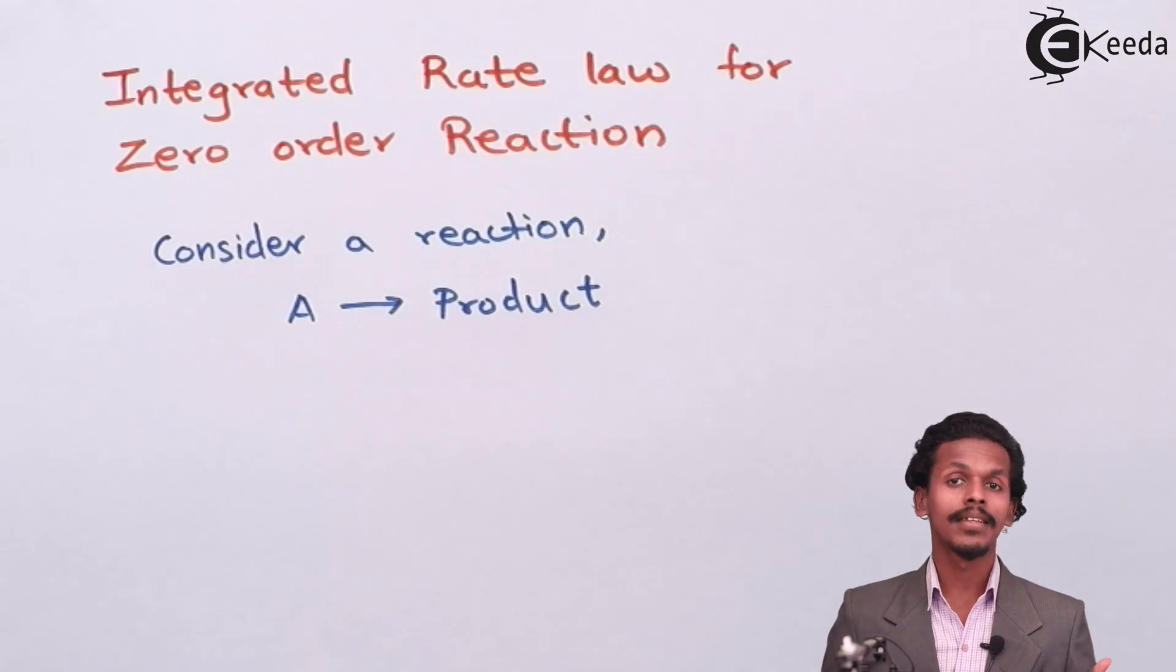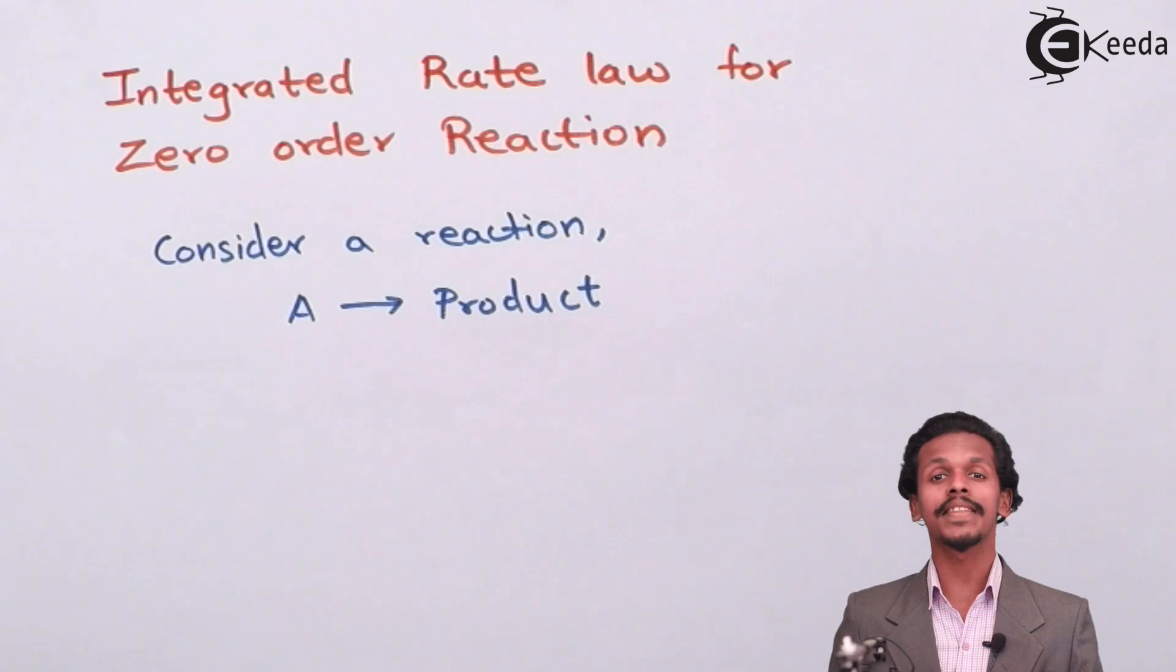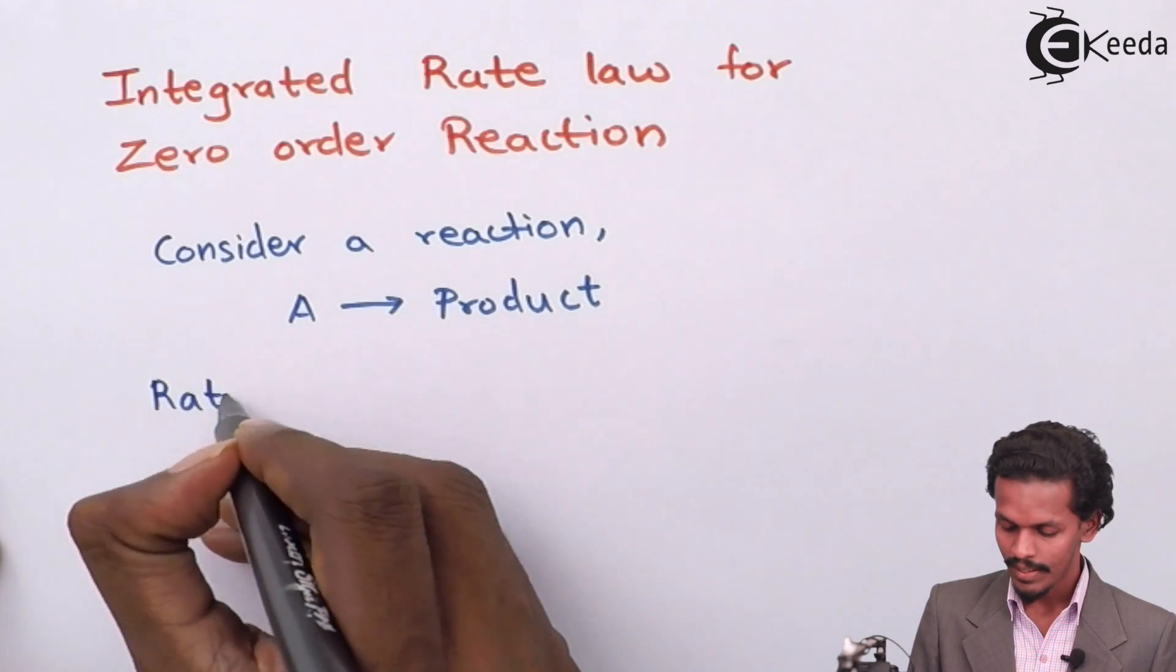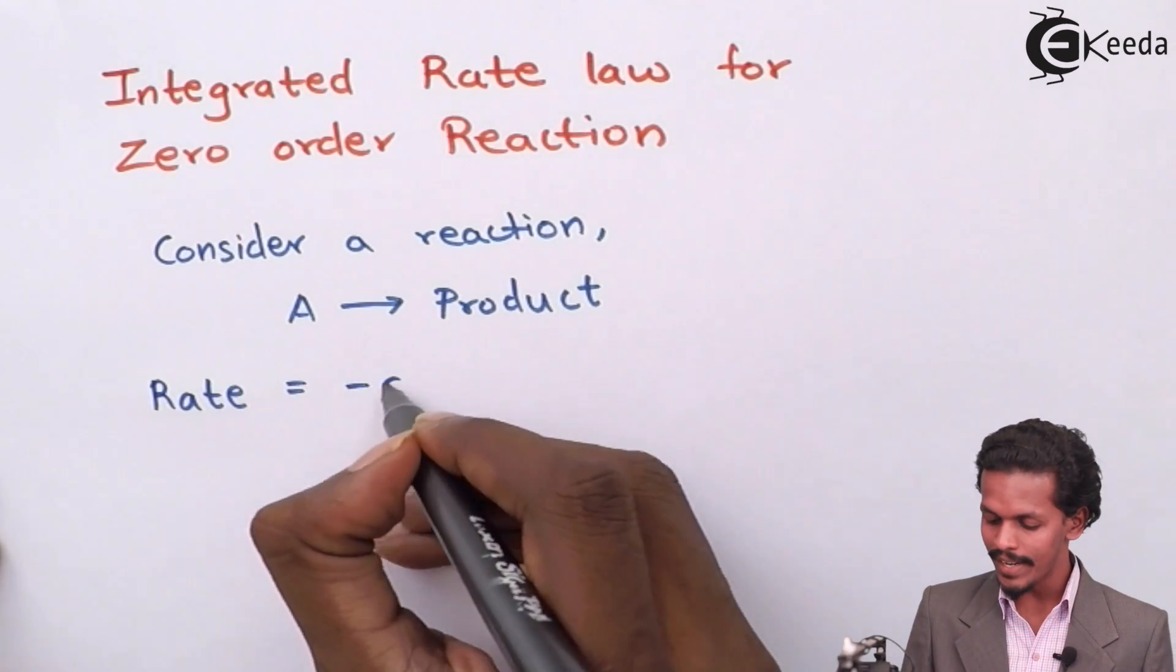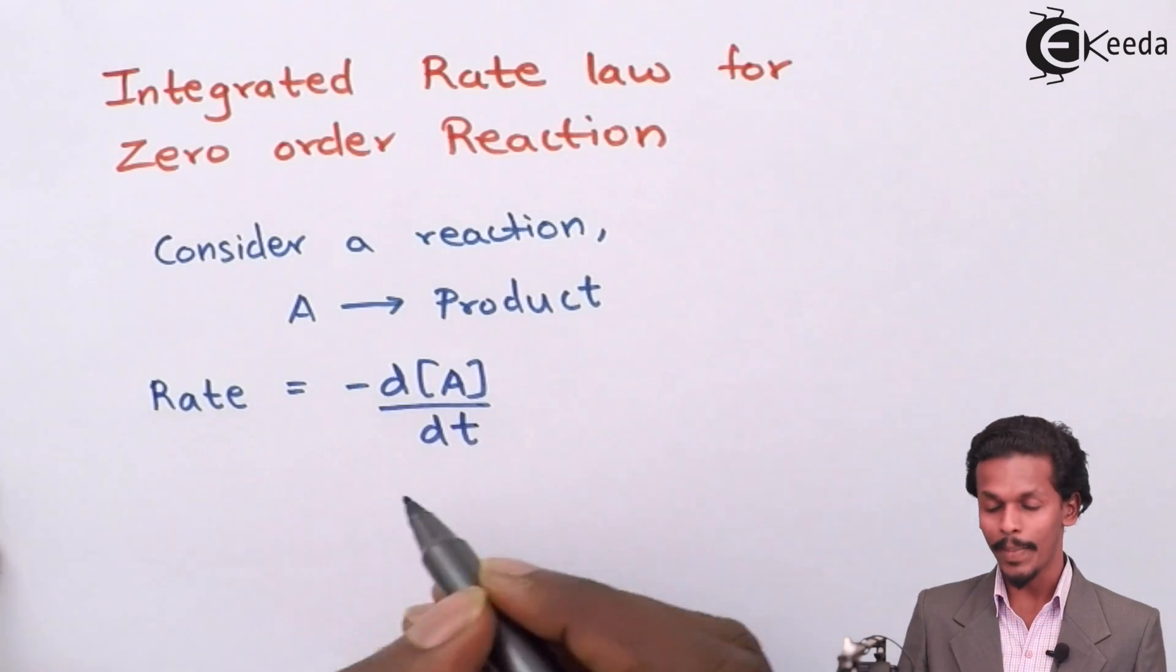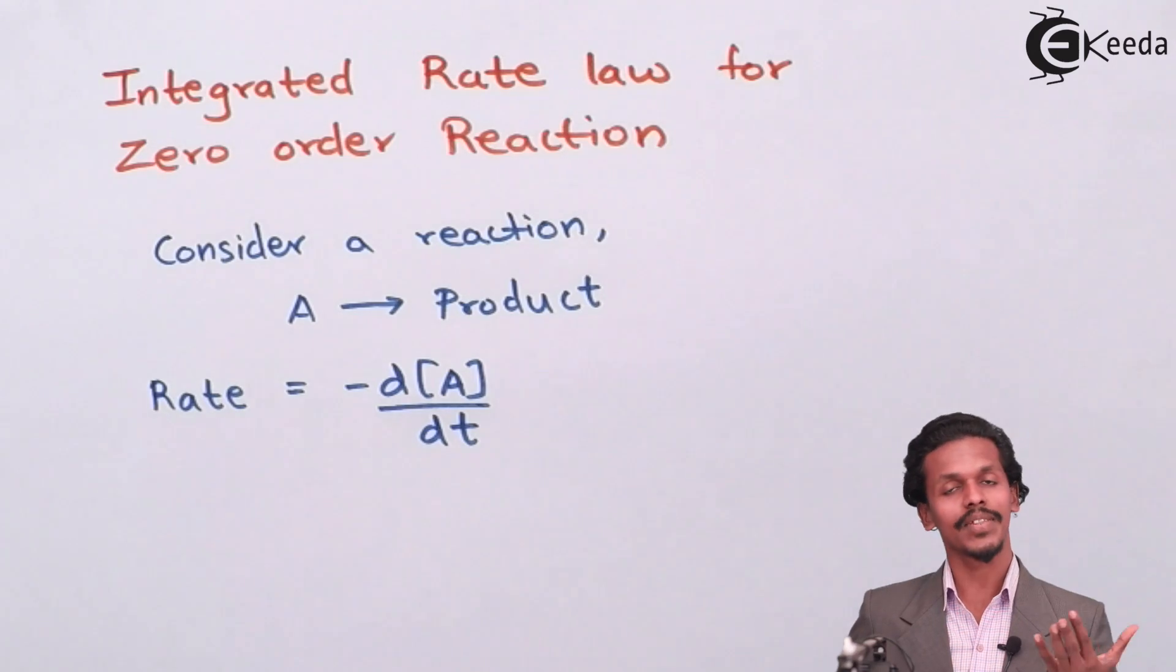As time increases, the concentration of reactant decreases. This is nothing but the rate of reaction. For this, I could write the rate of reaction as rate equals minus d[A] divided by dt. The minus symbolizes that the concentration decreases with respect to time.